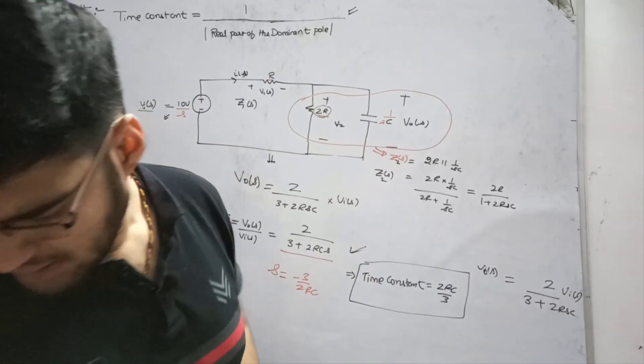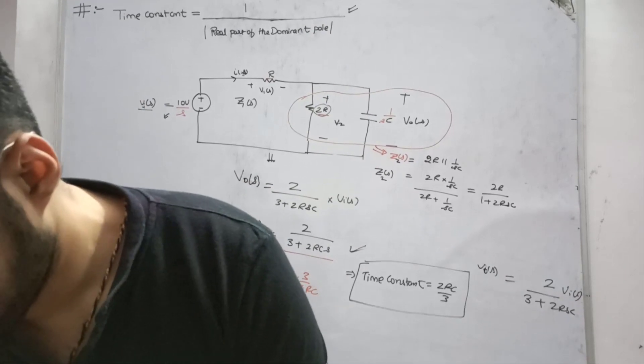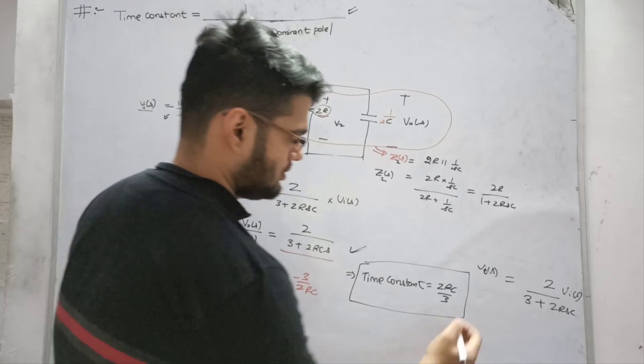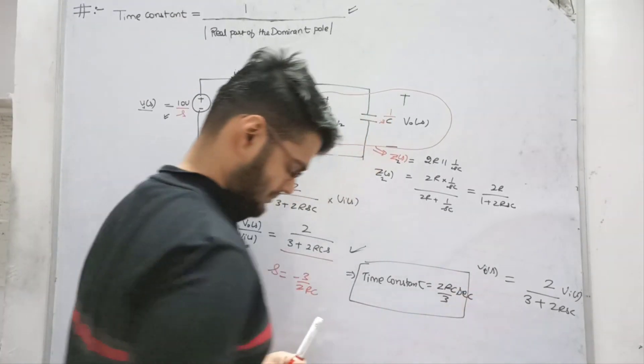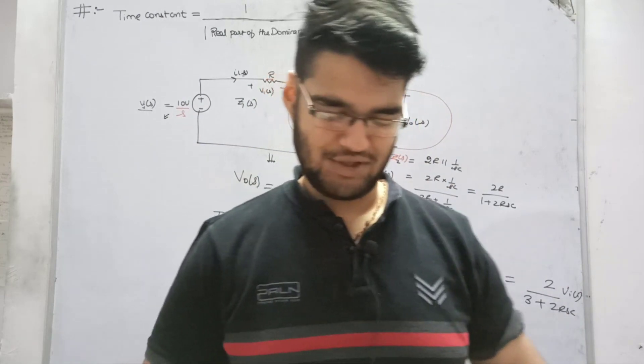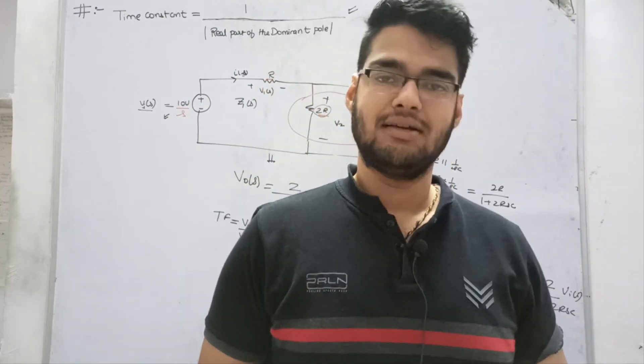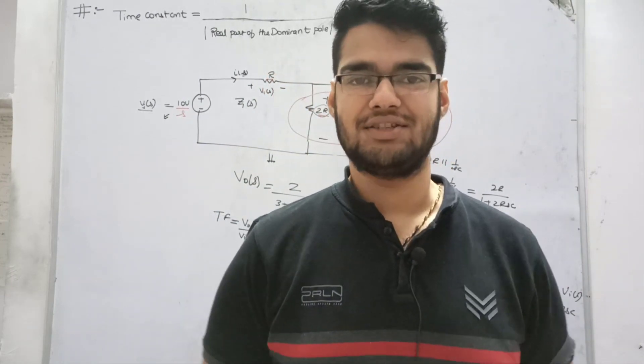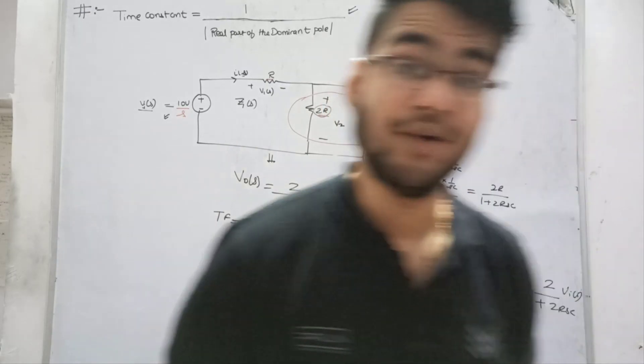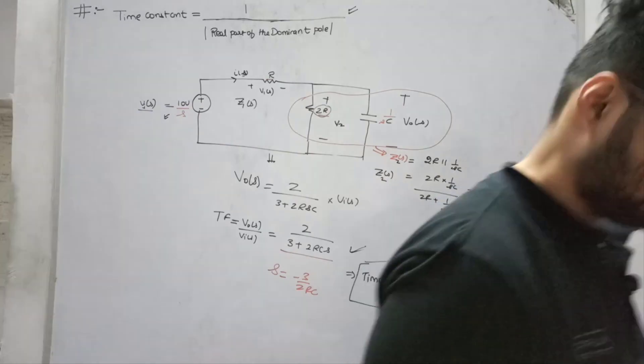So it's 2RC by 3. In the options, the D option should be correct. Check it out for a minute. Okay, D option, write the unit - seconds. I hope it will be clear. If anything is wrong, tell me in the comments. This is my first lecture, so thank you for listening to me. Next video, bye, thanks a lot.